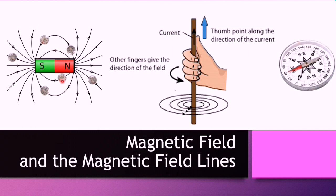The magnetic field lines come out of the North Pole and go into the South Pole as indicated here. The direction of a field line at any point shows the direction of the force that every magnetic North Pole would experience at that point. The field is strongest where the field lines are closest together, and the field is weaker when the lines are further apart.